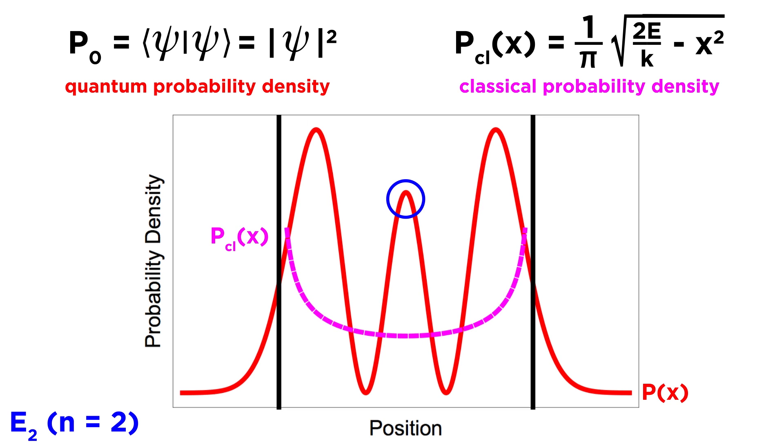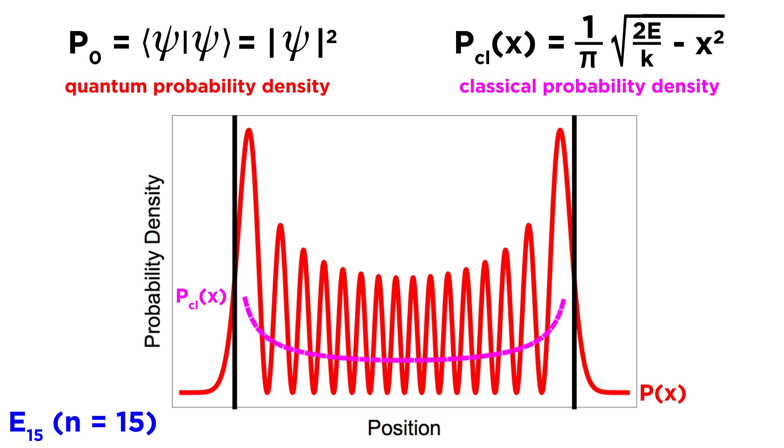If we go to E2, again there is a high probability that the quantum particle will be found at the center, while for the classical particle still not much has changed.